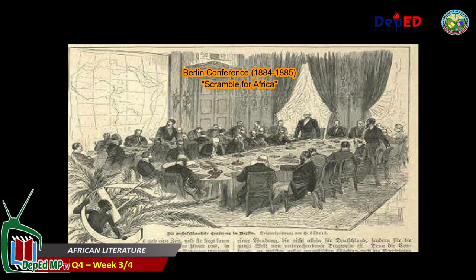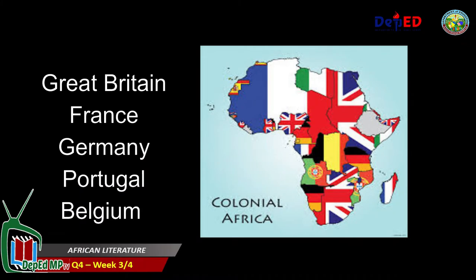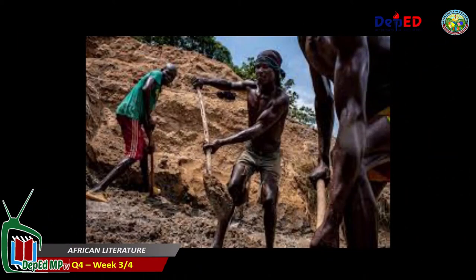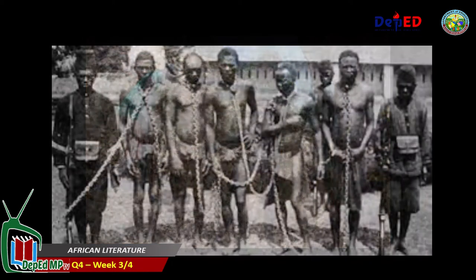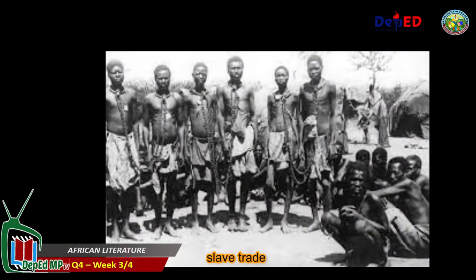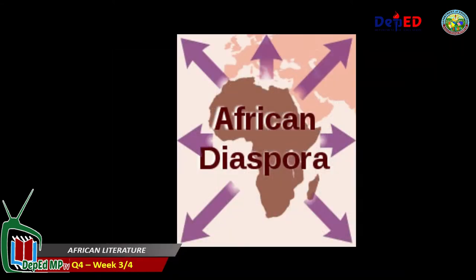The Berlin Conference of 1884 to 1885, also known as the Scramble for Africa, formalized the territorial claims of European countries in the African continent. Great Britain, France, Germany, Portugal, and Belgium had their shares on the partitioning of African lands. Sadly, the Berlin Conference had no plans whatsoever about the African people from whom the lands were divided. Eventually, the African people suffered from severe brutality, slavery, and displacement during the colonization period, and the slave trade brought millions of African people to Europe and America as slaves — hence the term African diaspora.